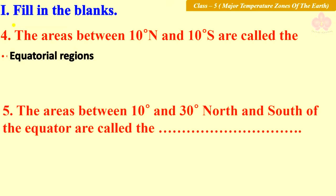Number four: The areas between 10 degrees north and 10 degrees south are called the blank — the answer is equatorial regions. Number five: The areas between 10 degrees and 30 degrees north and south of the equator are called the blank.